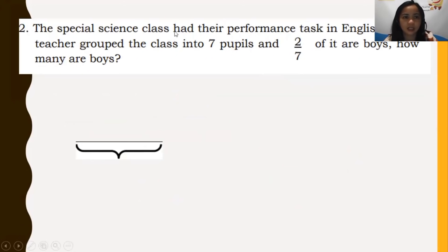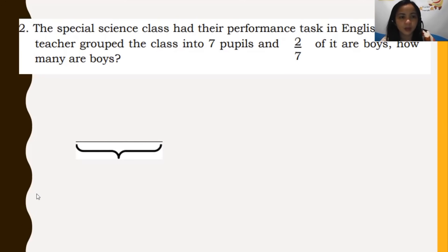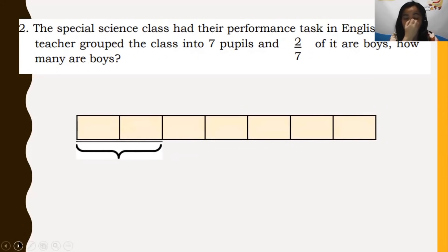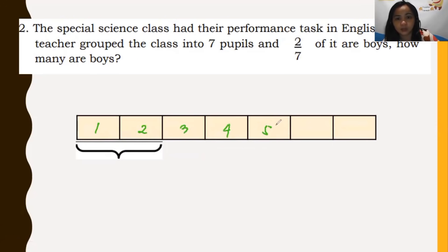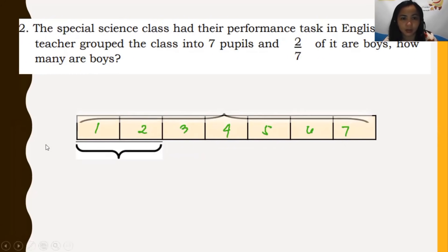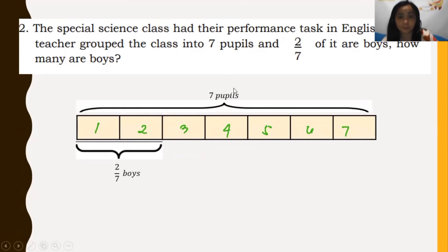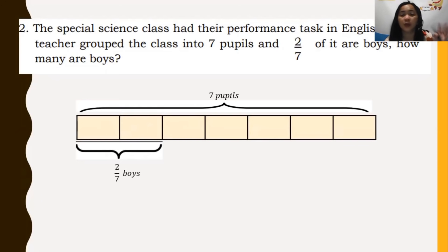Number 2: A special science class had their performance task in English. If the teacher grouped the class into 7 pupils, and 2/7 of them are boys, how many are boys? We draw 7 parts to represent 7 pupils. The 2 parts highlighted are boys, and the rest are girls. Each part represents 1 pupil, so count how many pupils are in the 2 parts to find the number of boys.